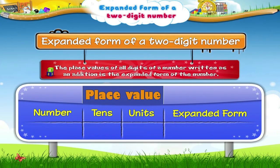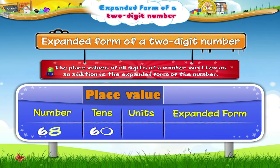Isn't that easy? Let us take another two-digit number: 68. Here, 6 is in the tens place. So, its place value is 60. And 8 is in the units place. So, its place value is 8.